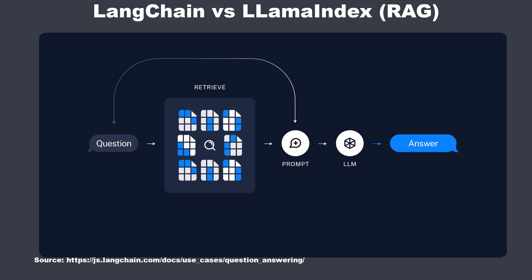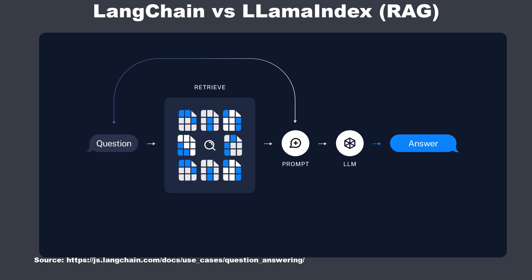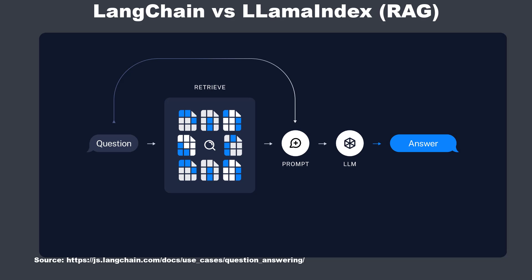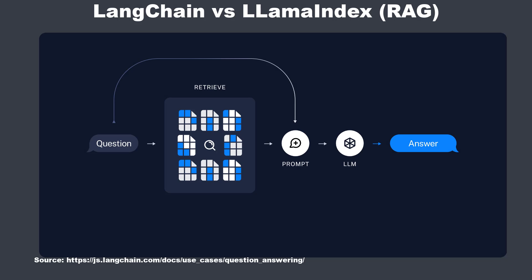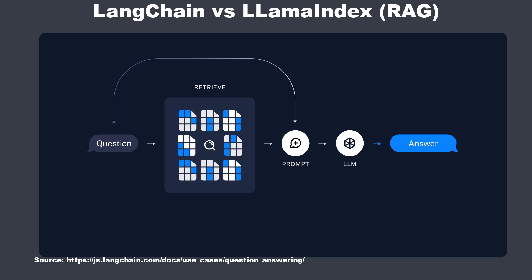After the indexing step, you can make retrieval. You've got a question, and you embed that question. You now compare your question to the vectors inside the vector store and retrieve the most similar documents. You take that small amount of documents, pass it to a prompt, and then pass the complete prompt and the documents to the LLM, which will generate a final answer from that combination. That's the generation step in retrieval augmented generation.